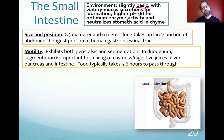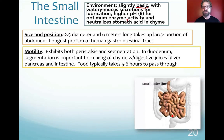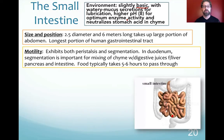The small intestine is about 6 meters or 20 feet long — the longest portion of the gastrointestinal tract. Not only are many chemical processes happening here, but there's also motility: peristalsis from circular muscles on the outside, and segmentation — an additional mechanical breakdown of food. In the duodenum, segmentation is important for mixing chyme with digestive juices from the liver, intestines, and pancreas. Food takes about five to six hours to travel through the small intestine.